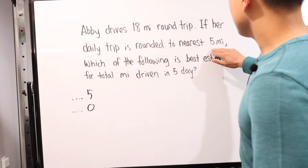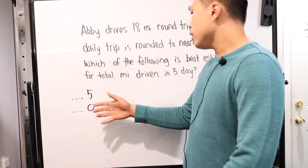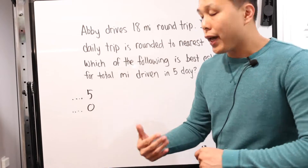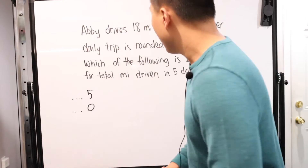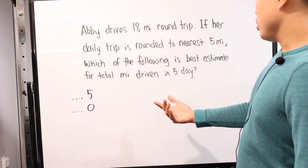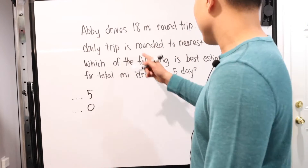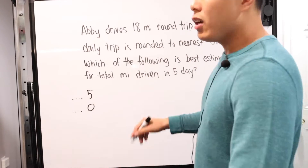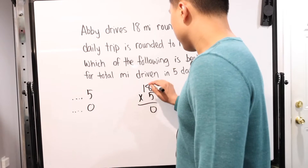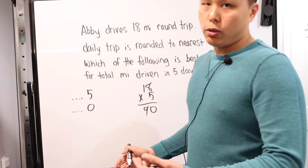So when you're thinking about this and it says round to the nearest five, you look at the possible answers and see which ones end in five or zero — everything else is out the window. So let's look at this. You have 18 miles a round trip and you're doing it for five days. You can round first and then multiply, or multiply and then round. If we do 18 times five, that's 90 — that would be the actual answer.